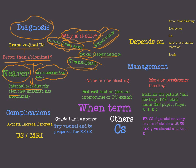Sometimes we use translabial ultrasound — just between the labia — which is still better than transabdominal ultrasound. So transvaginal is the best, then translabial if afraid of transvaginal, then transabdominal. This is how the diagnosis is made. In the next video I'm going to talk about the management and complications of placenta previa.